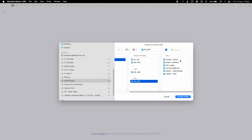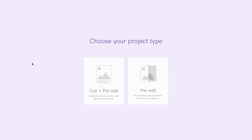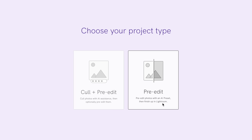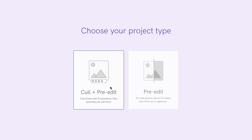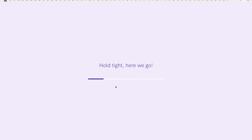You go through your computer, select the photos you want, and you'll be presented with two options. On the left is cull only and then pre-edit later, or you can jump straight into the pre-edit, which is Narrative's AI preset if you've already culled your work. We need to cull first, so we click on cull plus pre-edit.